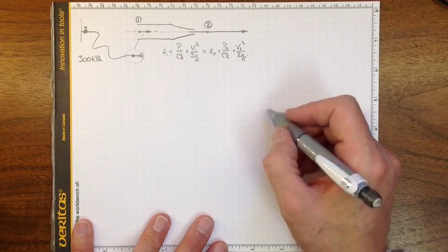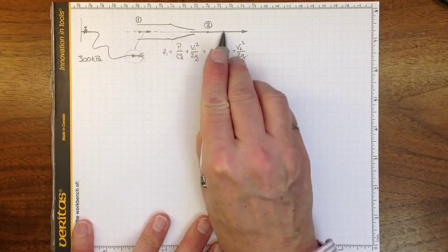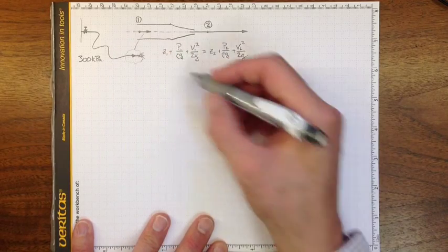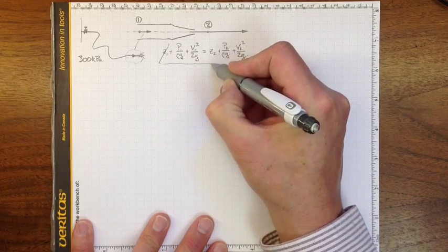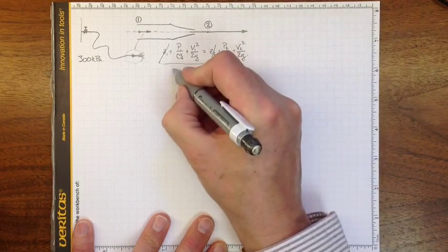Now I can make some assumptions. This is horizontal between 1 and 2, so Z1 and Z2 are equal and they cancel out.